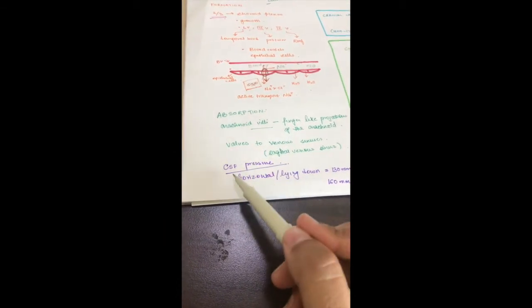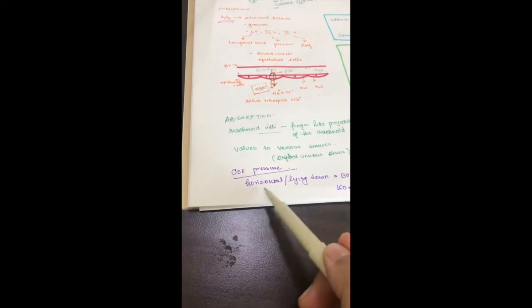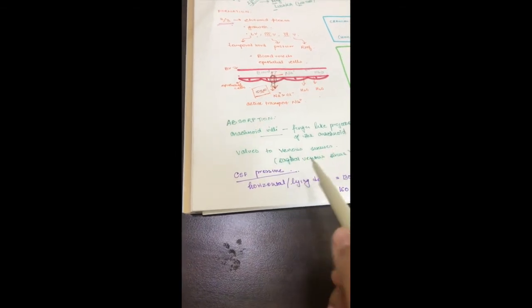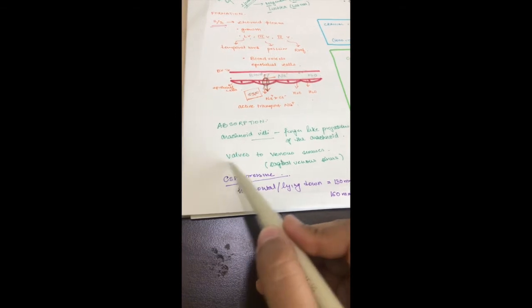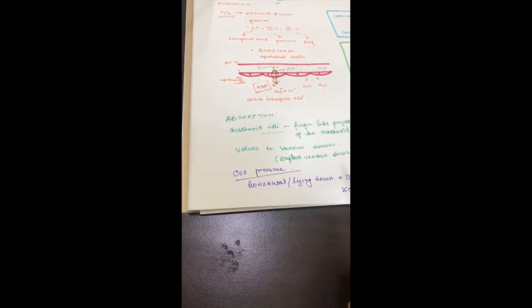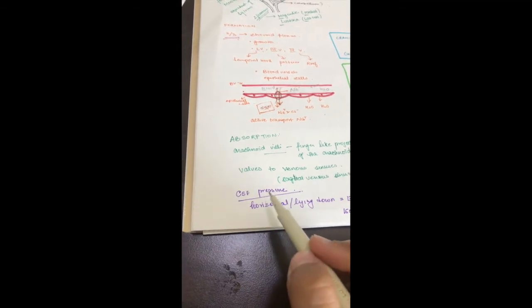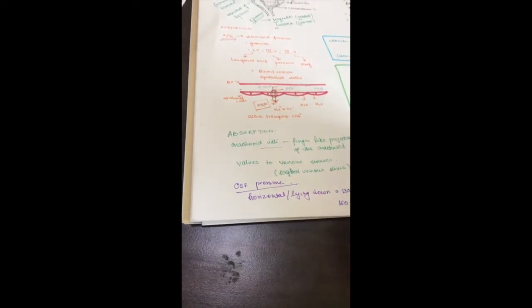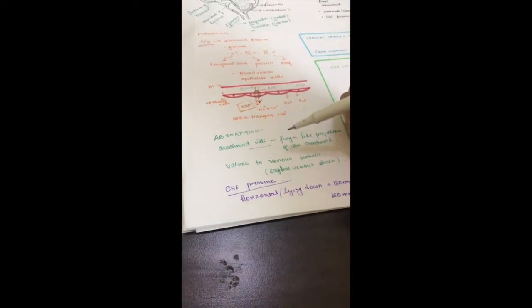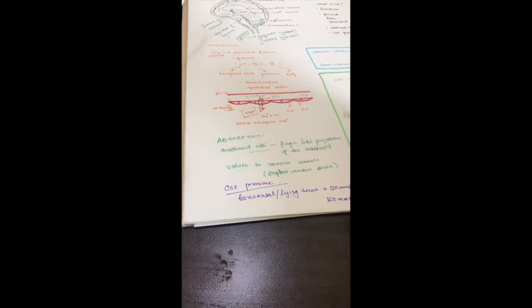During absorption, these valves control CSF pressure because the amount of CSF being produced is more or less constant. A rise in CSF pressure is most probably due to defective absorption. The arachnoid villi valves open only when the pressure difference between the subarachnoid region and the venous sinuses is at least 1.5 mmHg, allowing CSF to flow into the venous sinuses.